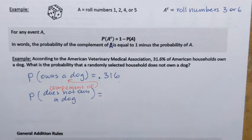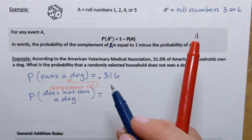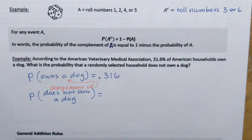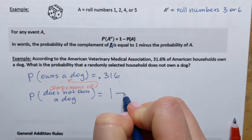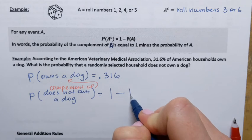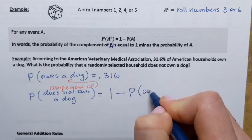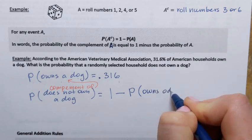Since it's a complement of that event, it means that according to the complement rule, to find this probability, we can simply take 1 and subtract the probability of the event household owns a dog.